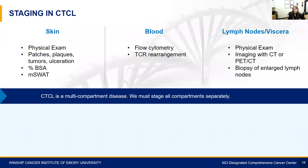How do we stage CTCL? CTCL is a multi-compartment disease, so we stage each compartment separately. We start with the skin, staged using physical exam paying close attention to patches, plaques, tumors, and ulceration, and calculating percent body surface area. We also use an mSWAT score to calculate how much skin is involved. For the blood, we do flow cytometry and T-cell gene rearrangement. To assess lymph nodes and viscera, we use imaging, and any abnormal or enlarged lymph nodes would need to be biopsied for lymph node staging.